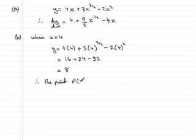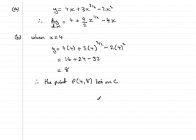So therefore we can say that the point P, which is (4, 8), lies on C. That's part B done. Now we come on to part C where we've got to find the equation of a normal.